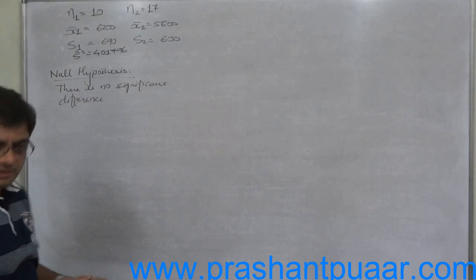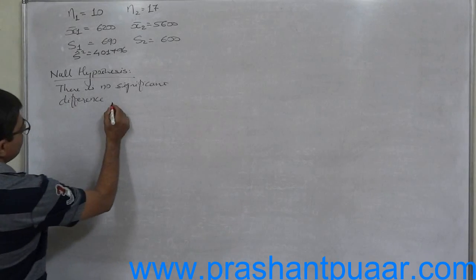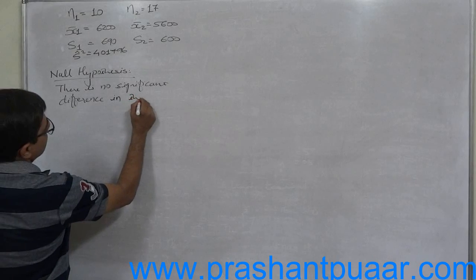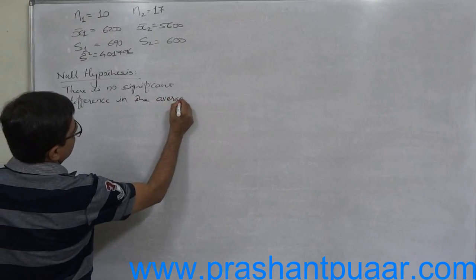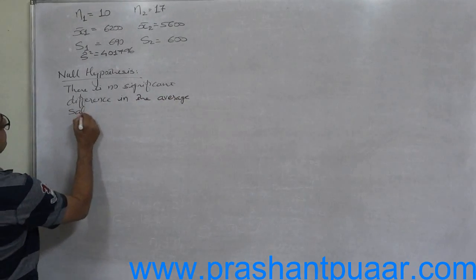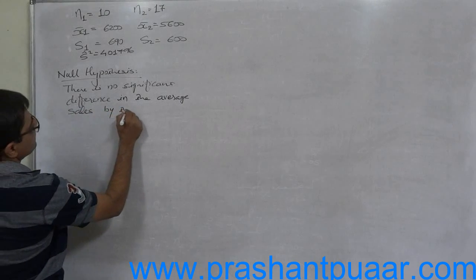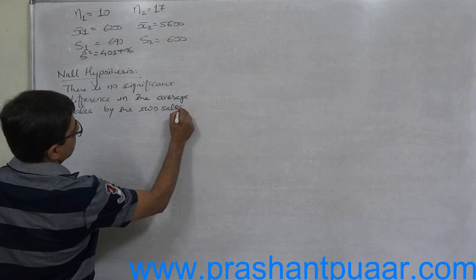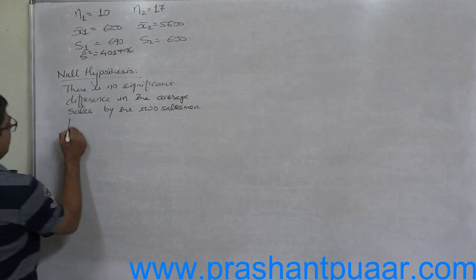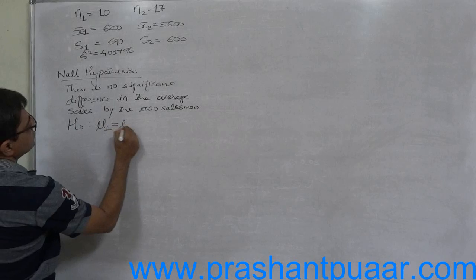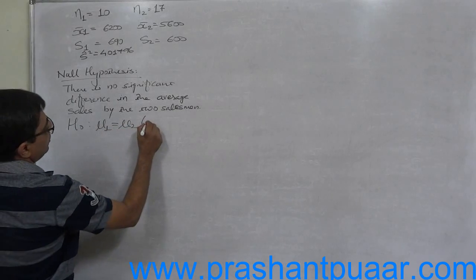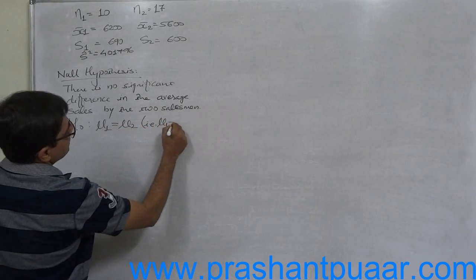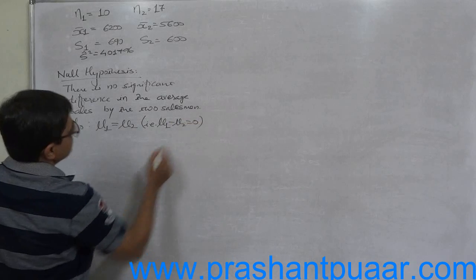There is no significant difference in the average sales by the two salesmen. H0: mu1 equals mu2, or mu1 minus mu2 equals 0.